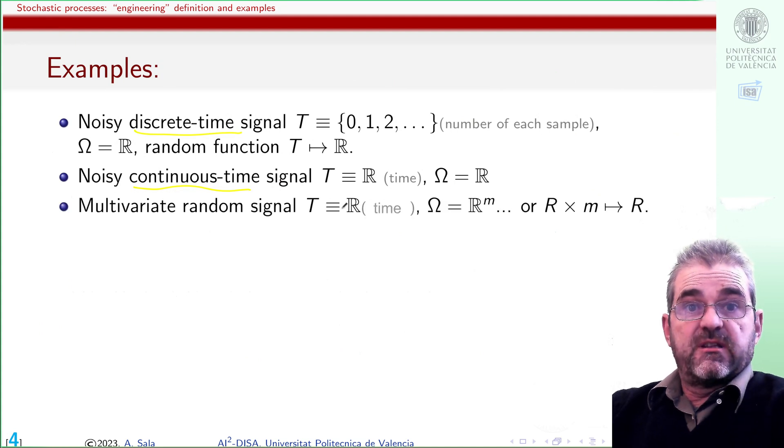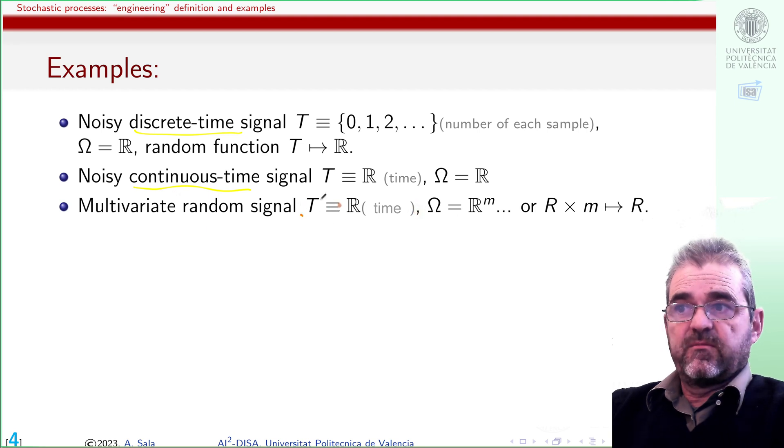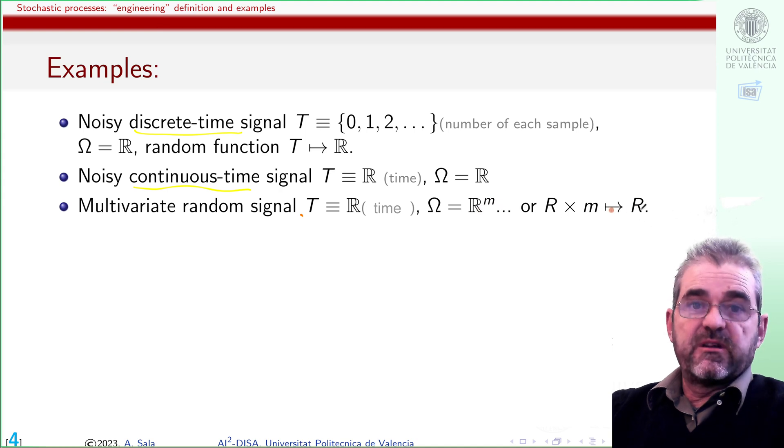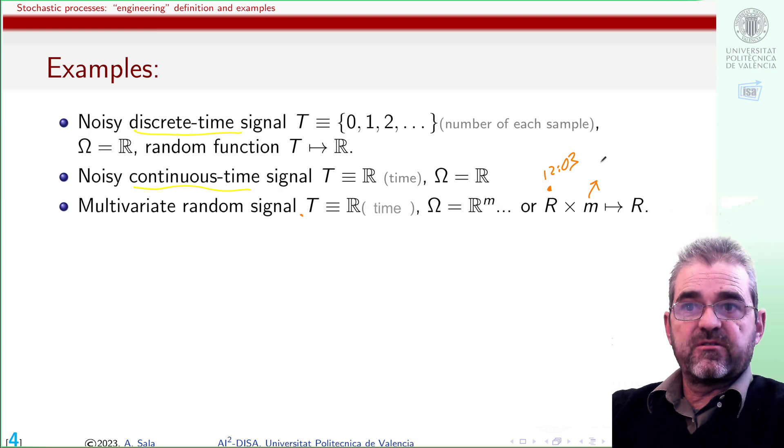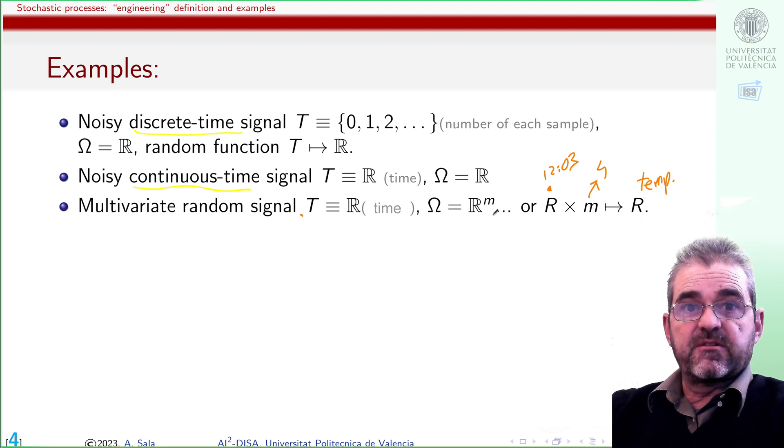We may also measure in a chain manufacturing process the temperature of some piece of cast iron at five points. Then we have multivariate random signals. We have time as our index set and we have samples of five temperatures, R5. We may also think that if we put a clock and the number of sensor, then we get that temperature. The way in which we arrange the random variables may be not unique.